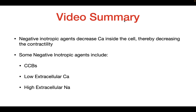In summary, we talked about how negative inotropic agents decrease calcium levels inside the cell, thereby decreasing contractility. We also talked about the three negative inotropic agents: calcium channel blockers, low extracellular calcium, and high extracellular sodium. I hope this video helped you understand what negative inotropic agents do, and I hope to see you in the next one. Thank you for watching.